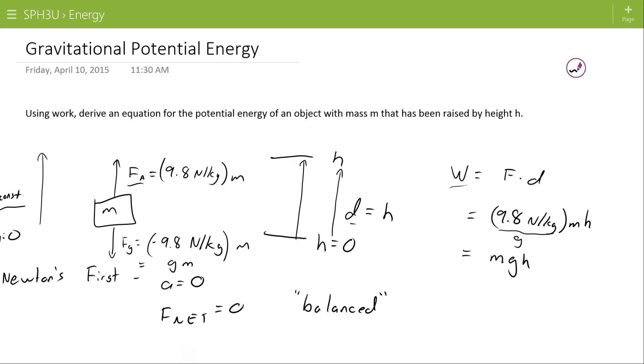With that in mind, since this work has all gone into raising this object up, or taking it to a point where gravity wants to do work on it, or giving it gravitational potential energy, this is our formula for Eg.